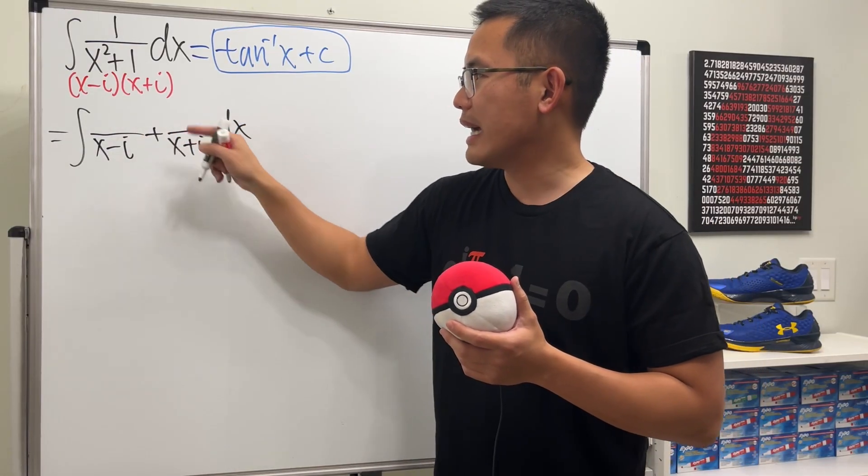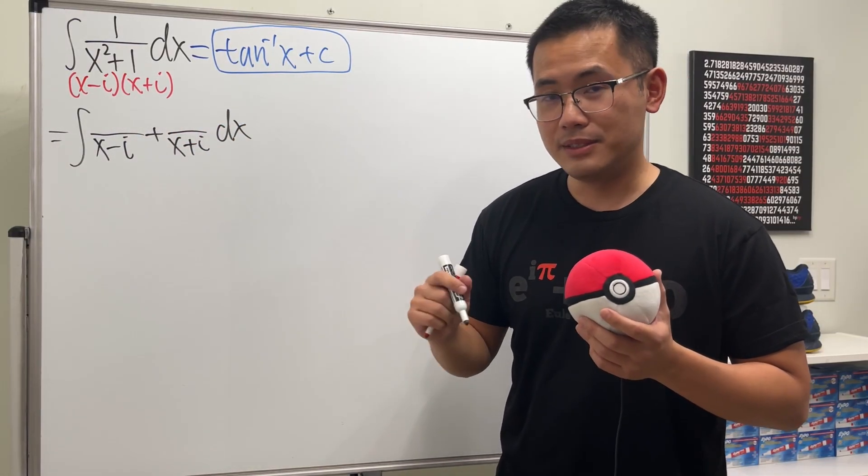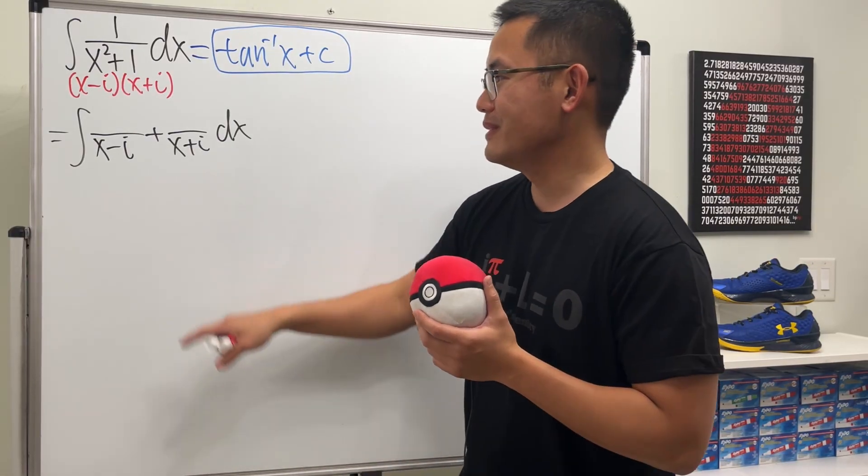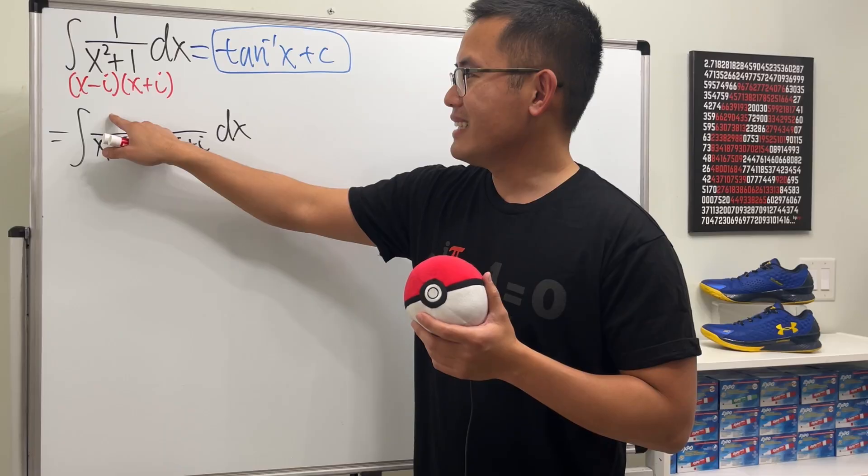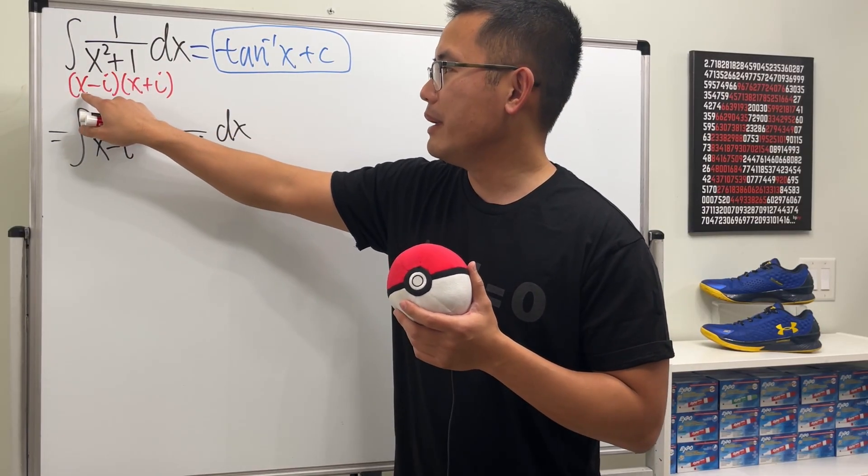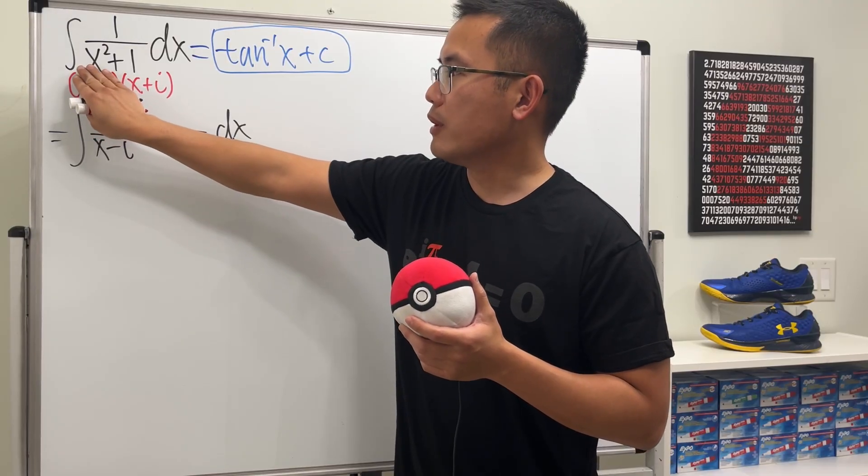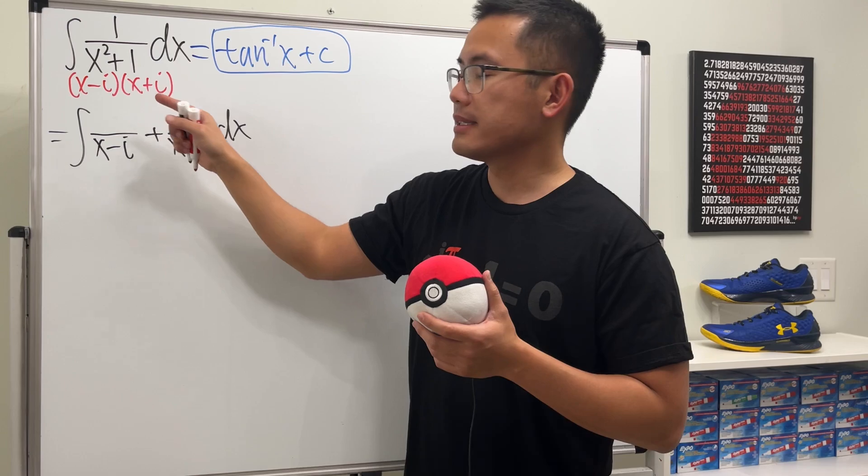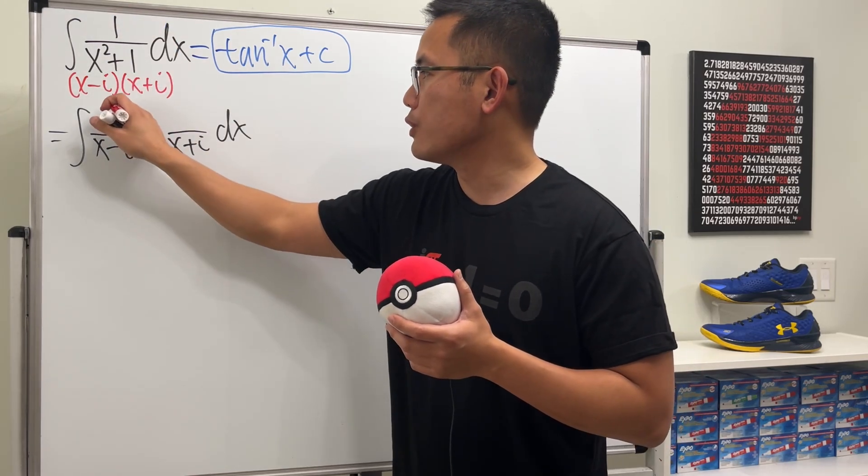And to figure this and that, that's just constants. It's still legitimate to do partial fractions with the cover up method as well. To figure this out, we go back to the original and cover this denominator. And we have to ask ourselves, how can we make x minus i equals 0? x has to be i. And we put this i right here. i plus i is 2i on the bottom, so we get 1 over 2i.